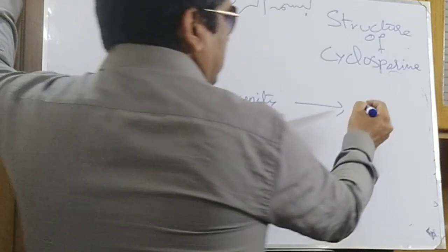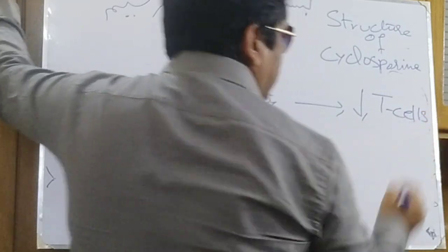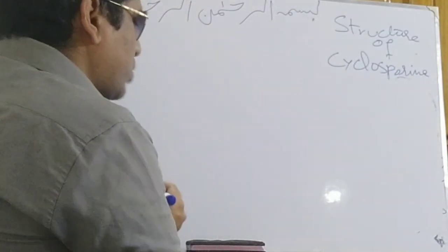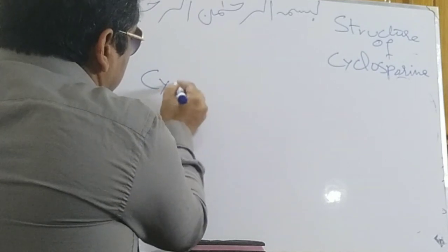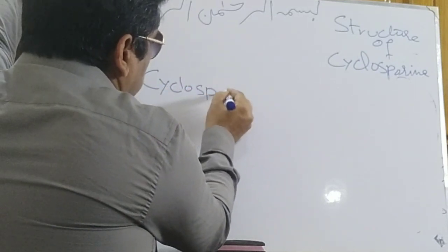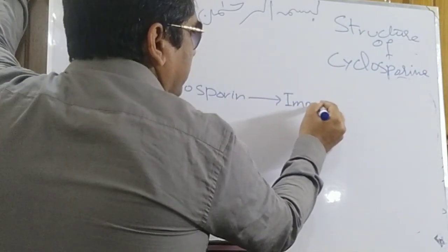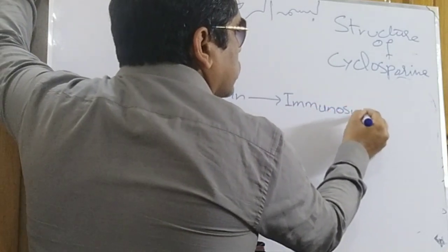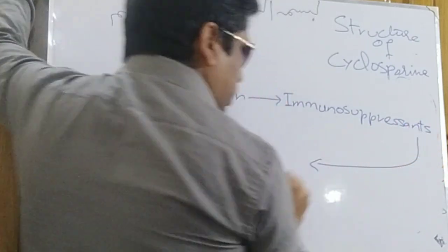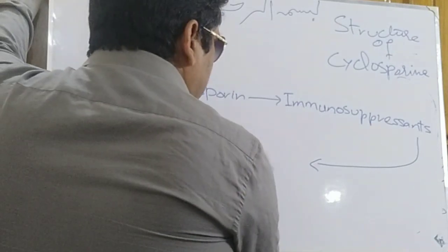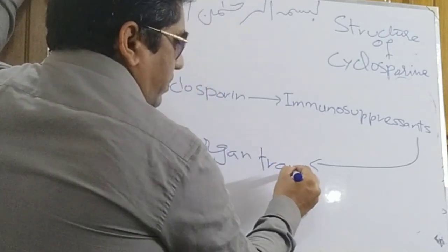By interfering or decreasing the activity of T cells, cyclosporine is an immunosuppressant drug widely used in organ transplantation to prevent rejection. That is why they are also called anti-rejection drugs.